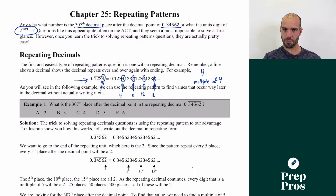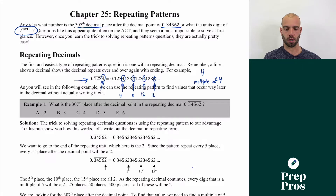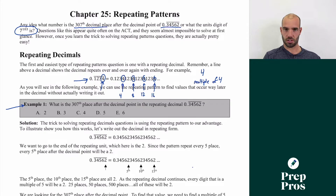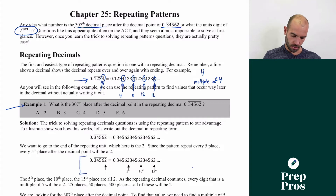So if it was the 40th digit after the decimal it'd be a four; 44 after the decimal would be a four; 400, 4000 — all multiples of four are going to land on the four. We can use that kind of pattern to count way down and solve questions. Example one asks: what is the 307th place after the decimal point in the repeating decimal 0.34562? Here again it repeats, so we use the pattern and go to the end of it — we're going to look at the twos.